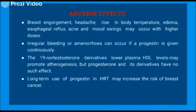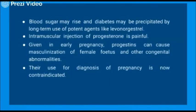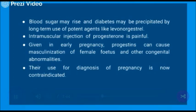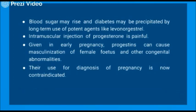Now we will see the adverse effects of progesterone. Common adverse effects include breast enlargement, headache, rise in body temperature, edema, and esophageal reflux. Acne and mood swings may occur with higher doses. Irregular bleeding or amenorrhea can occur if progesterone is given continuously. The 19-nor-testosterone derivatives lower plasma HDL level and may promote atherogenesis, but progesterone and its derivatives have no such effect. Long-term use of progesterone in HRT may increase the risk of breast cancer. Blood sugar may rise and diabetes may be precipitated by long-term use of potent agents like levonorgestrel. Intramuscular injection of progesterone is painful. Given in early pregnancy, progesterone can cause masculinization of female fetus and other congenital abnormalities, and their use for diagnosis of pregnancy is now contraindicated.